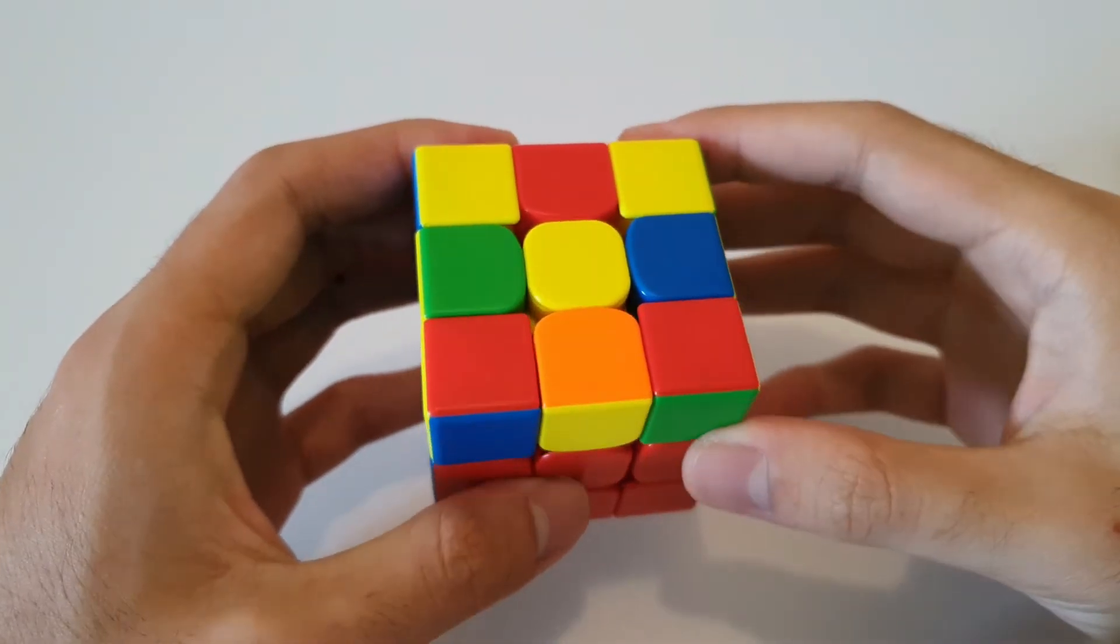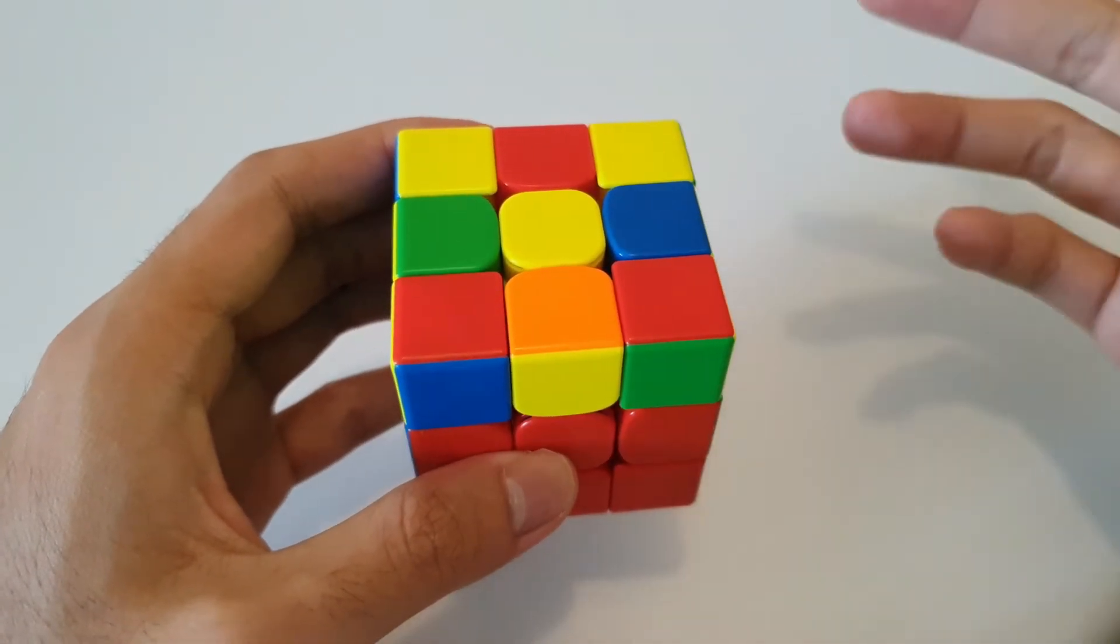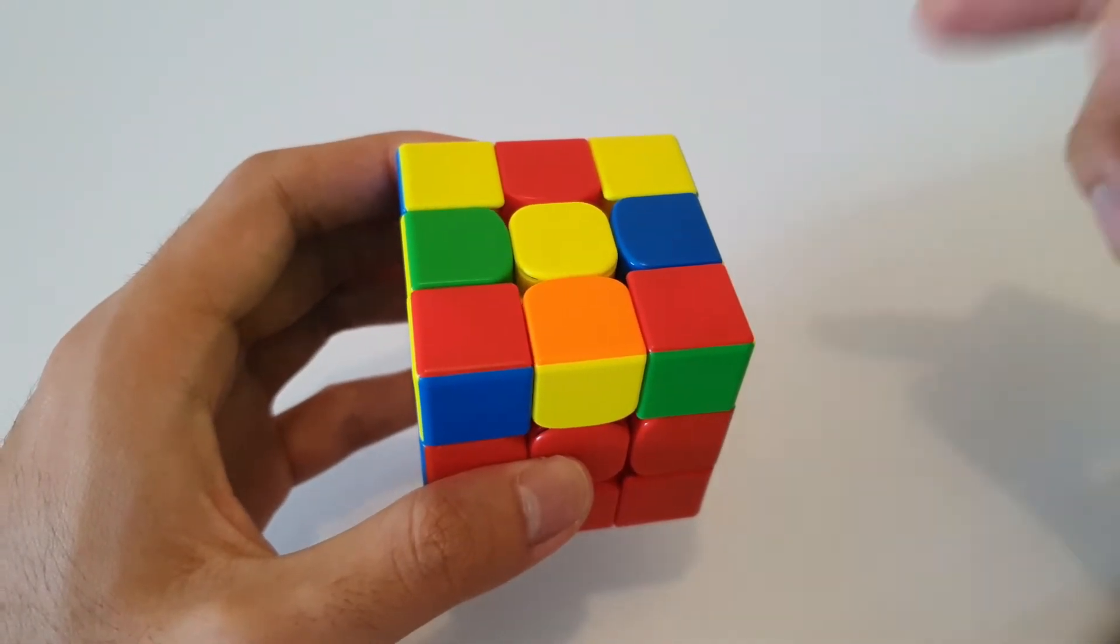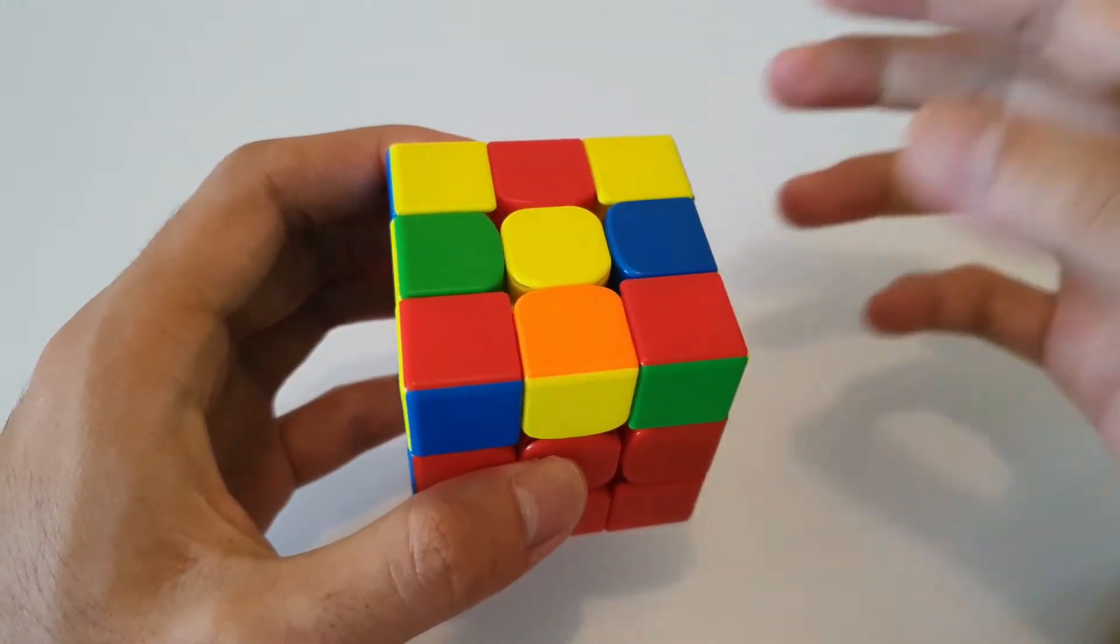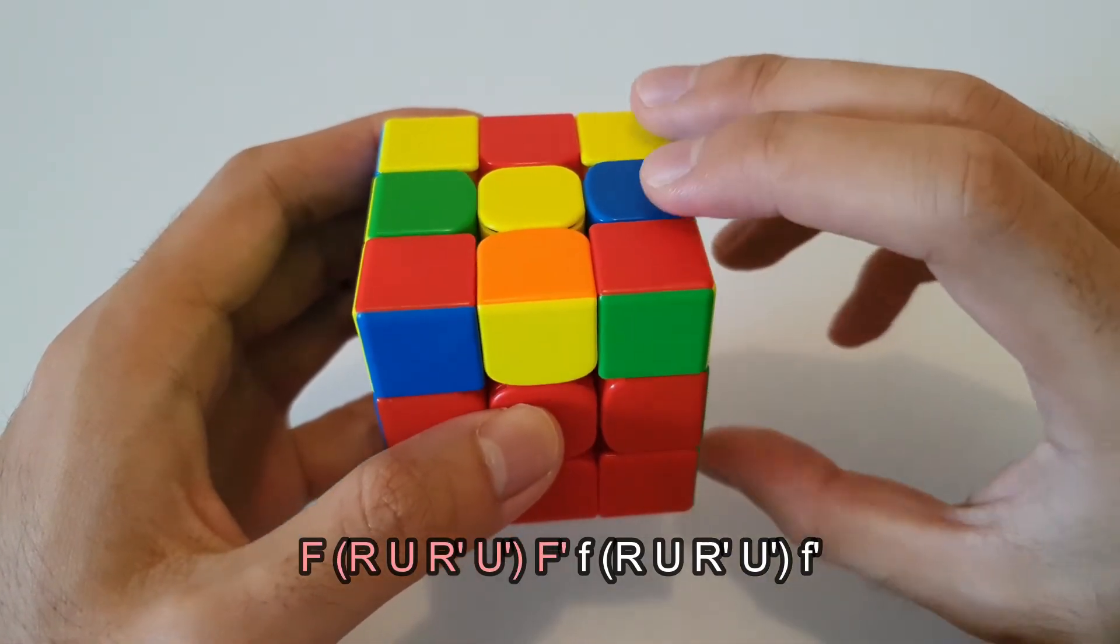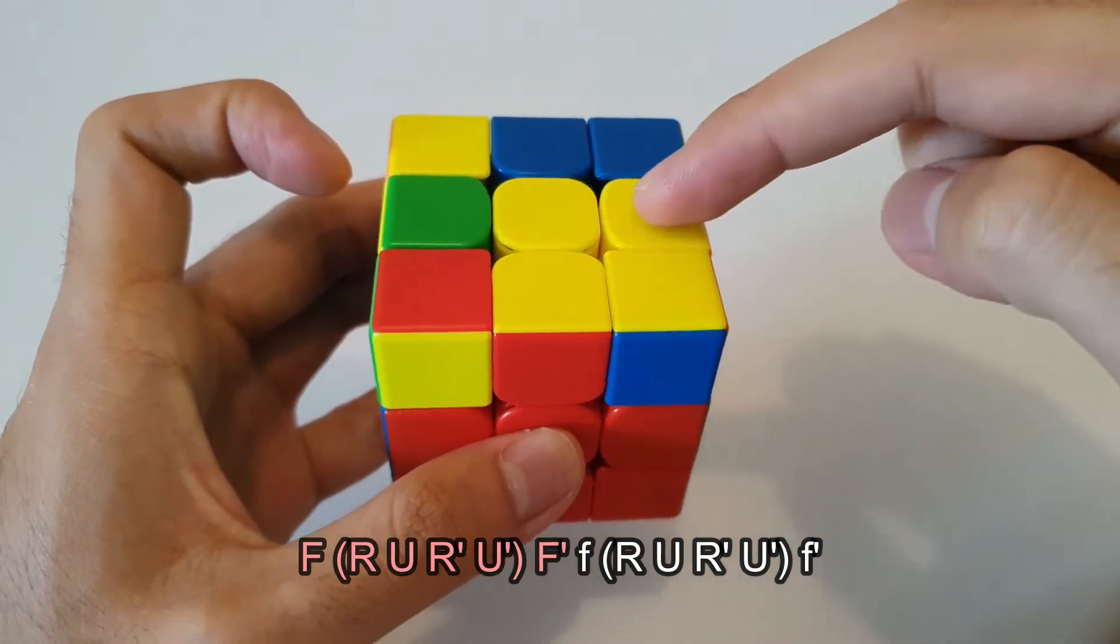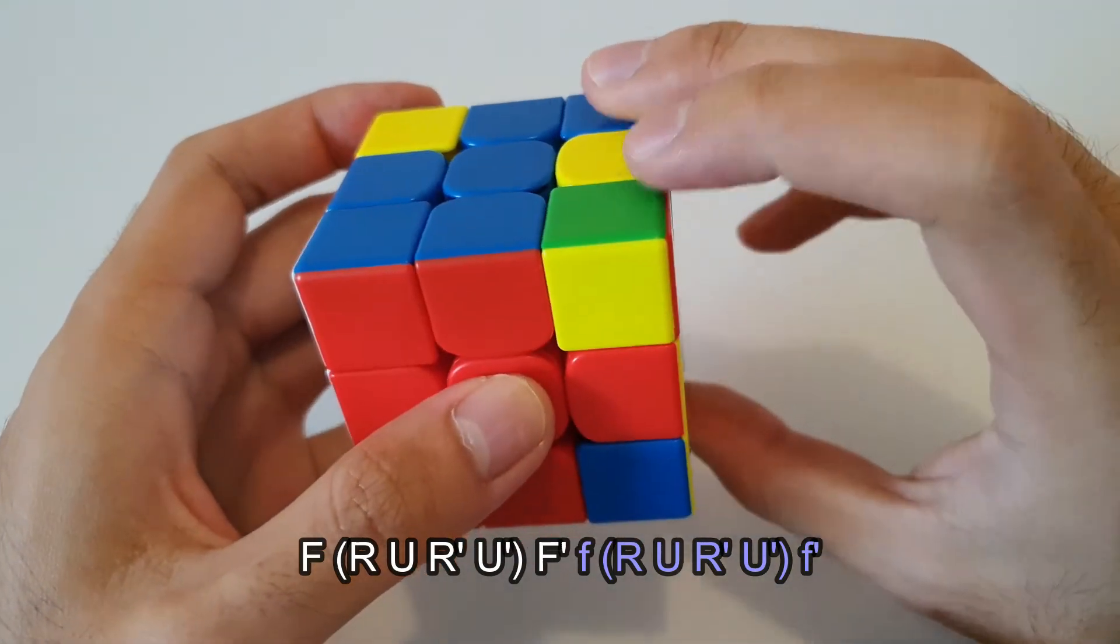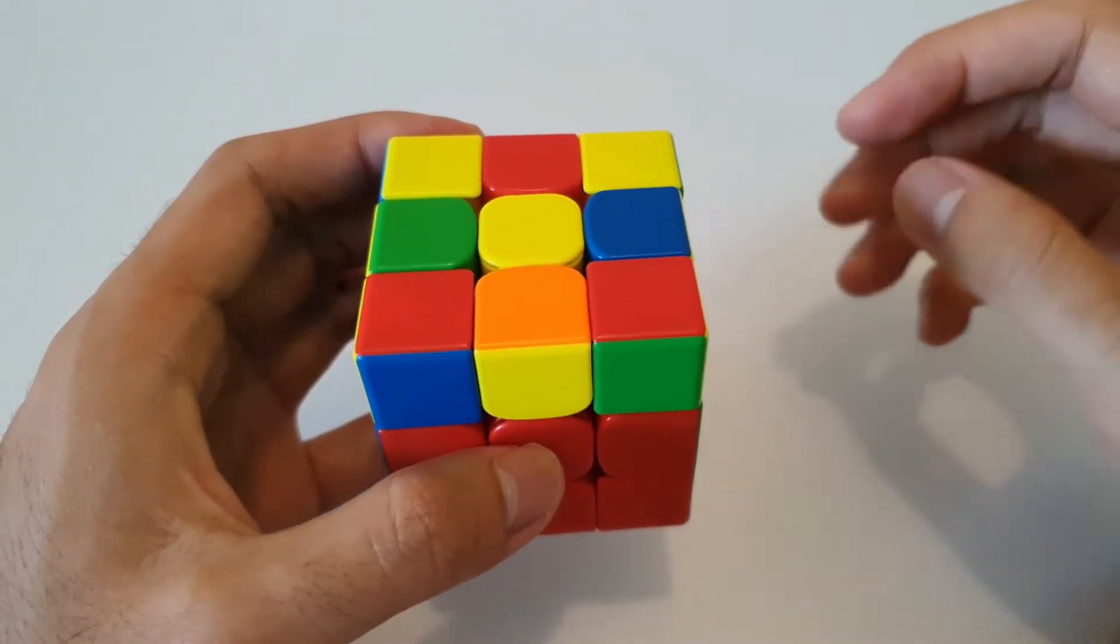The final case that you can get is this case here, when you only have a dot on the top. These dot cases are definitely one of the longer cases to get the cross, but the algorithms can be made up of the previous two algorithms that you should already know. When you get the dot case, it doesn't really matter which angle you face. From any angle, start with the first algorithm that I showed, which is F sexy, F'. Once you've done that, you get this L case, which you can solve using the second algorithm that I showed, which is the wide F sexy, F'.